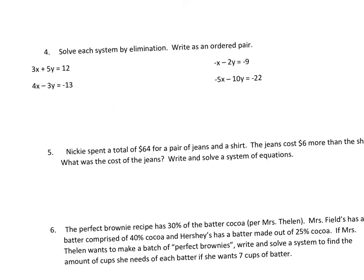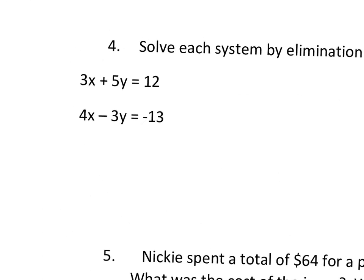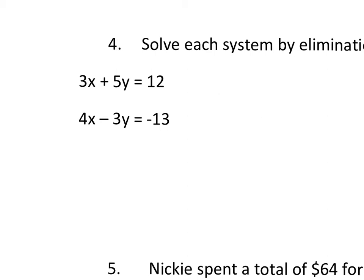You should also be able to solve by elimination. So if I'm going to solve this equation by elimination, I can either eliminate the x's or the y's. I'm going to choose to eliminate the x's. So I'm going to multiply the top by negative 4 and the bottom by 3. This is going to make it so the top is negative 12x and the bottom is 12x. So I can add them and they're going to eliminate.